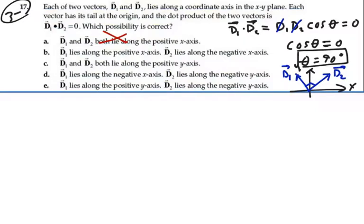d1 lies along the positive x-axis, d2 lies along the negative x-axis. Well, that would give them 180 degrees between the two vectors, not 90 degrees, so that wouldn't work either.